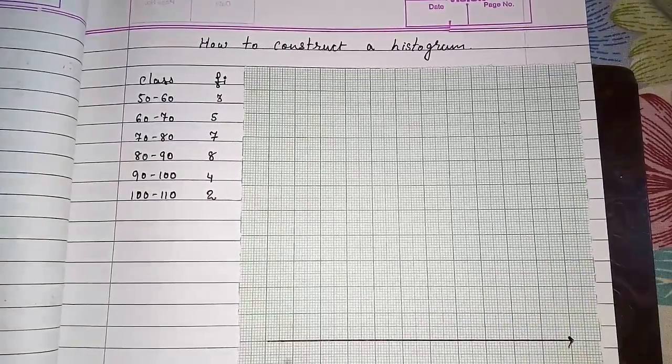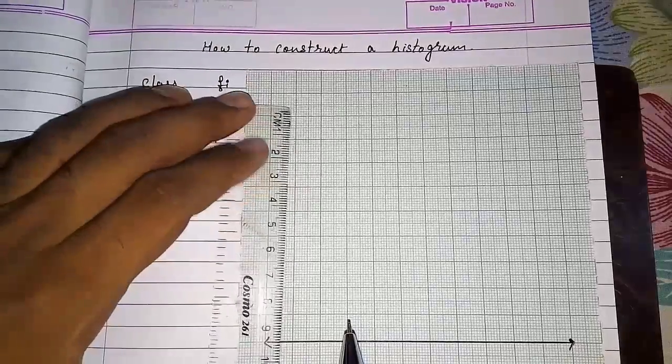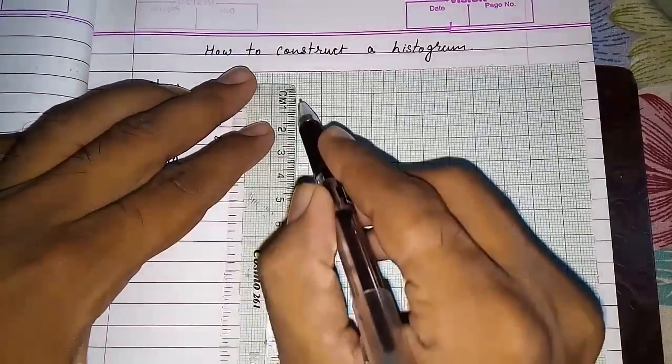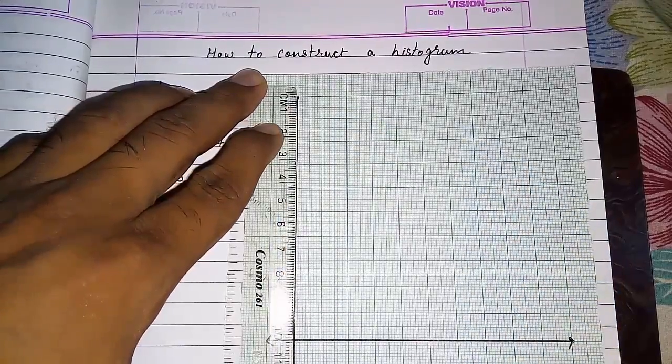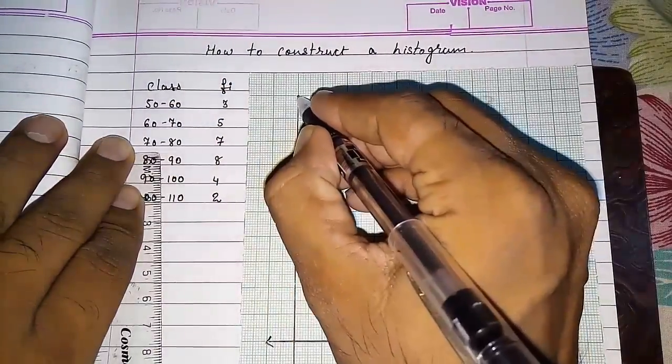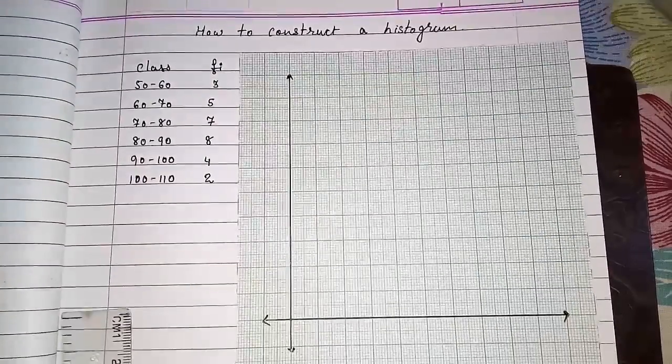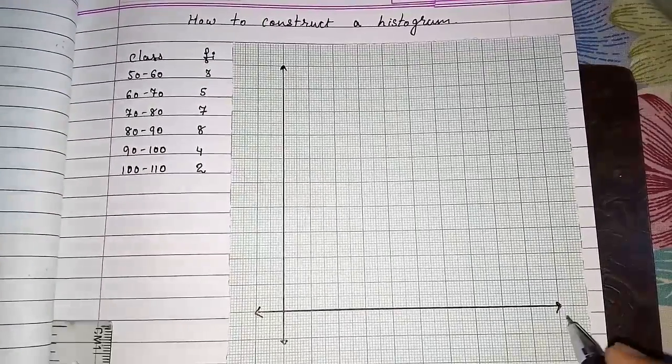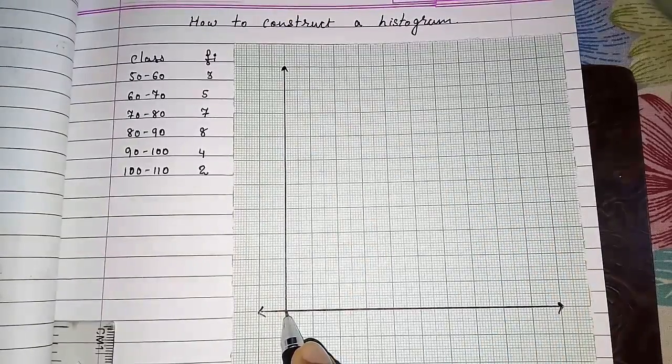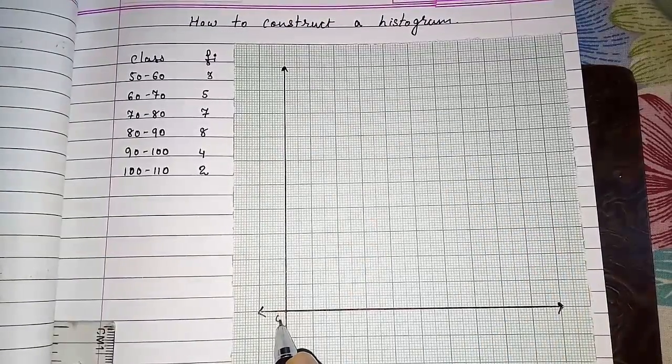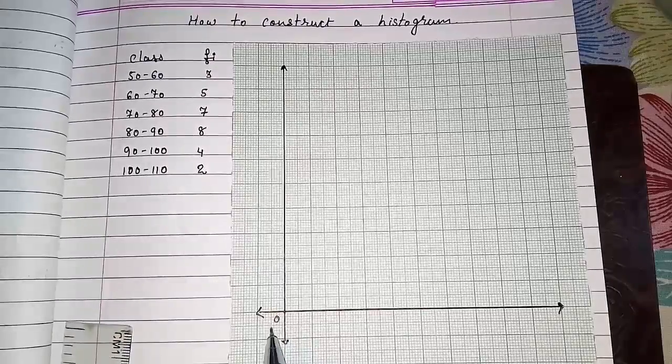This is our x-axis and here we will get y. You can see this is the x-axis and this is the y-axis. When both axes are intersecting, that is our origin. You can call it O or you can say 0 also.